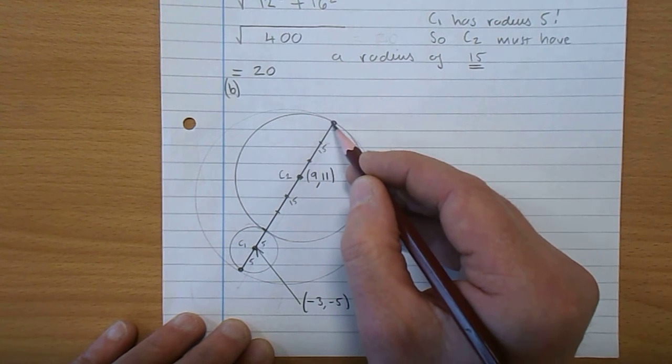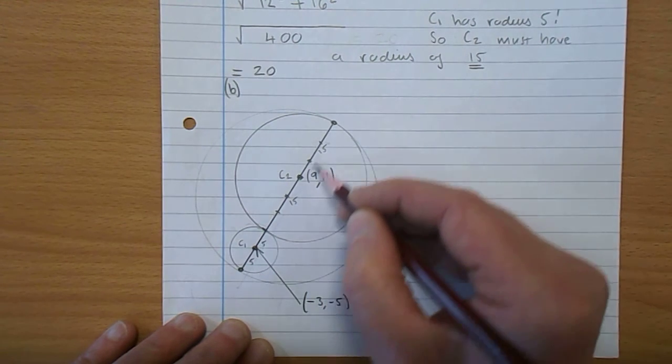that's the radius of C2. And another 5, 10, 15 there. So that's the diameter of C3.